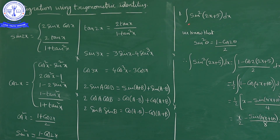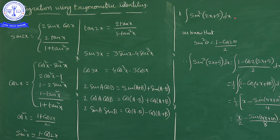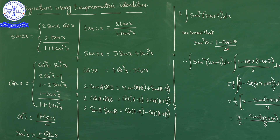First question: integration of sin²(2x+5) dx. We know the formula sin²θ equals (1 minus cos 2θ) / 2. So sin²(2x+5) can be written using this identity where θ equals 2x+5.